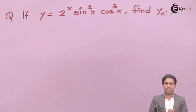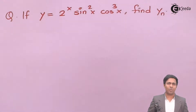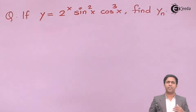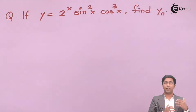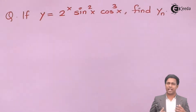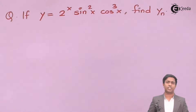Here we have the function 2 to the power x, sin square x, cos cube x, and for this we have to find out the nth derivative. Now the question is how to get it. If you observe, this function is a Transcendental Function, and if we see the formulae, we do not have any formula for 2 to the power x times sin square x times cos cube x.